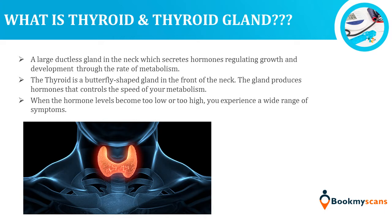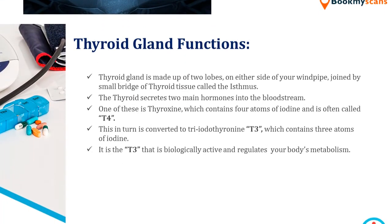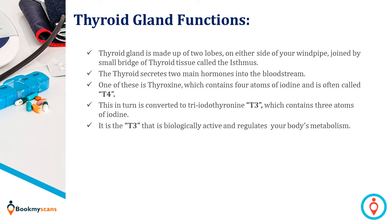When the hormone levels become too low or too high, you experience a wide range of symptoms. The thyroid gland is made up of two lobes on either side of your windpipe, joined by a small bridge of thyroid tissue called the isthmus.